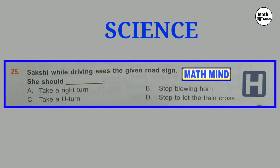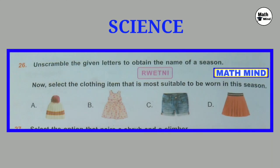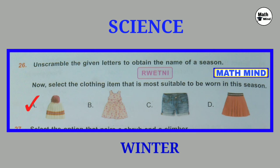Question number 25: Shakti while driving sees a given road sign. He should dash. Regarding the road sign, H is used for hospital. It indicates that a hospital is nearby, so we should stop blowing the horn. Correct option is B. Question number 26: Unscramble the given letters R-W-E-T-N-I to obtain the name of a season, then select the clothing item most suitable for that season. On unscrambling the letters, we get the word 'winter'. We need woolen clothes to protect us from cold in winter. So correct option is A: Woolen cap.